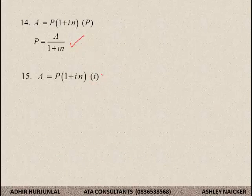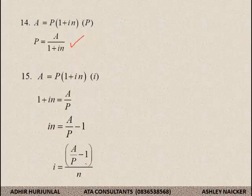Number 15. Manipulate for I a bit more. 1 plus IN is equal to A divided by P, because I get rid of the P. Next step, guys, I get rid of the 1. Goes over to the other side, becomes minus 1. And the last step over here, I get rid of the N. Or I divide both sides by N.